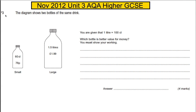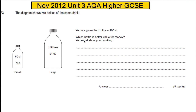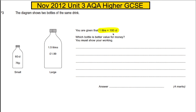Question three has got a star in it, so we have to be careful to show how we find our working. The diagram shows two bottles of the same drink. You are given that one liter is a hundred centiliters. Which bottle is better value for money? You must show your working. To compare like with like, we need the same amount of each drink.